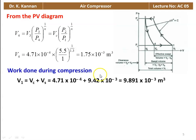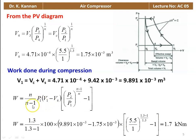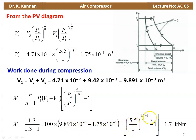V1 = Vc + Vs = 4.71 × 10⁻⁴ + 9.42 × 10⁻³ = 9.891 × 10⁻³ m³. Work done W = (n/(n-1)) × P1 × (V1 - V4) × [(P2/P1)^((n-1)/n) - 1]. Substituting: W = (1.3/0.3) × 100 × (9.891 × 10⁻³ - 1.75 × 10⁻³) × [(5.5)^(0.3/1.3) - 1] = 1.7 kN·m.